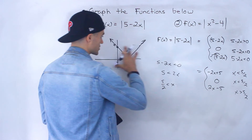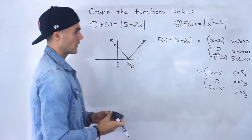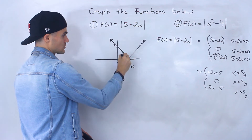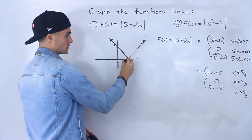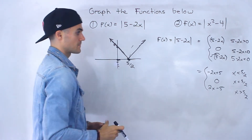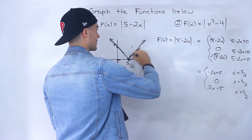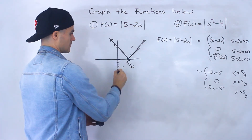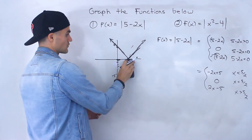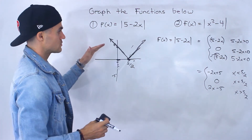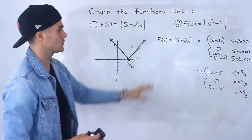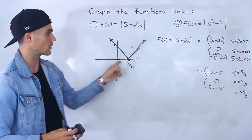This piecewise function corresponds directly to the graph. When x is less than 5/2, the graph follows the line negative 2x plus 5. At x equals 5/2, the y-value is 0. When x is greater than 5/2, the graph follows 2x minus 5 — which, if extended, would have a y-intercept of negative 5, but is only defined for x greater than 5/2. Those are the two methods for graphing this function.